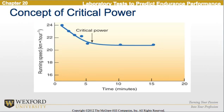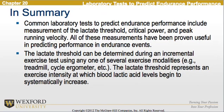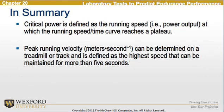Here is the concept of critical power where we see the plateau. All these measurements have been proven useful in predicting performance in endurance events. The lactate threshold can be determined using an incremental exercise test with any one of several exercise modalities — treadmill, cycle ergometer, etc. The lactate threshold represents an exercise intensity at which blood lactic acid levels begin to systematically increase. Critical power is defined as the power output at which the running speed over time curve reaches a plateau. The peak running velocity, in meters per second, can be determined on a treadmill or track and is the highest speed that can be maintained for more than 5 seconds.